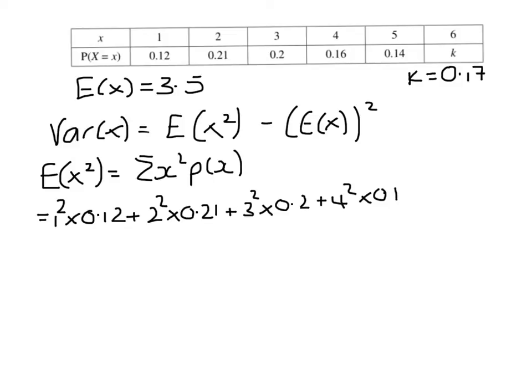So that's going to be 1 squared times 0.12 plus 2 squared times 0.21 plus 3 squared times 0.2 plus 4 squared times 0.16 plus 5 squared times 0.14 plus 6 squared times 0.17, and that is 14.94.